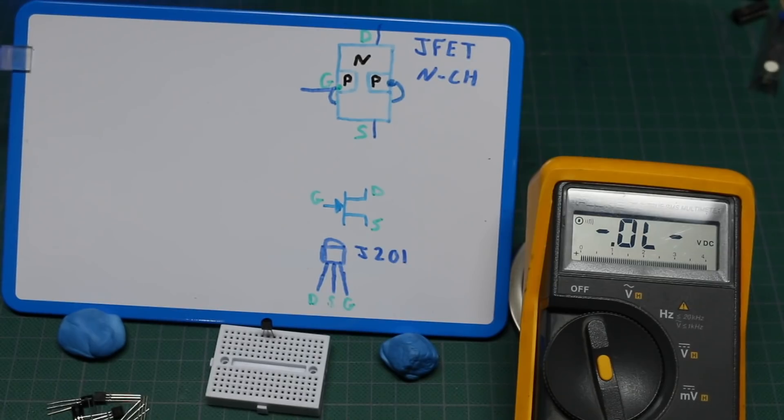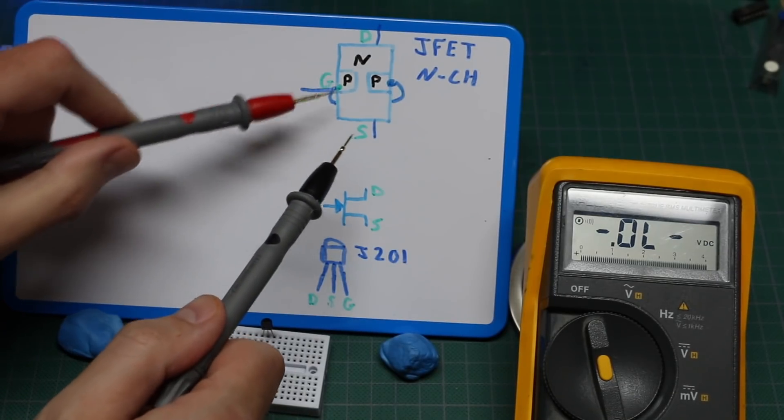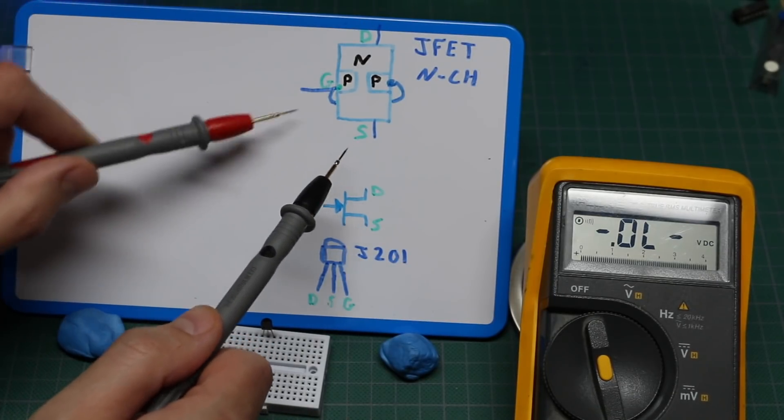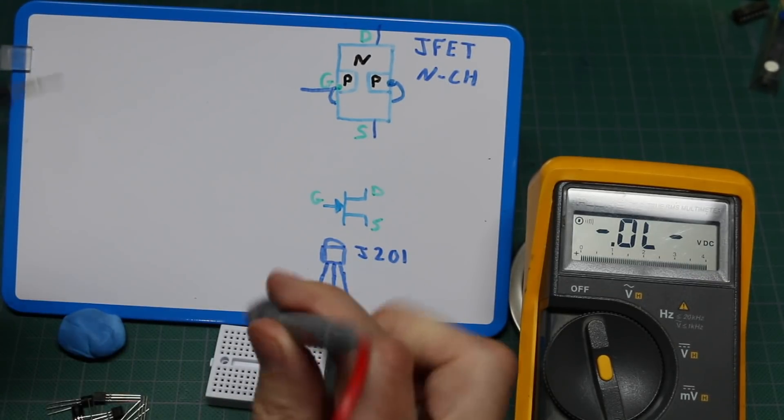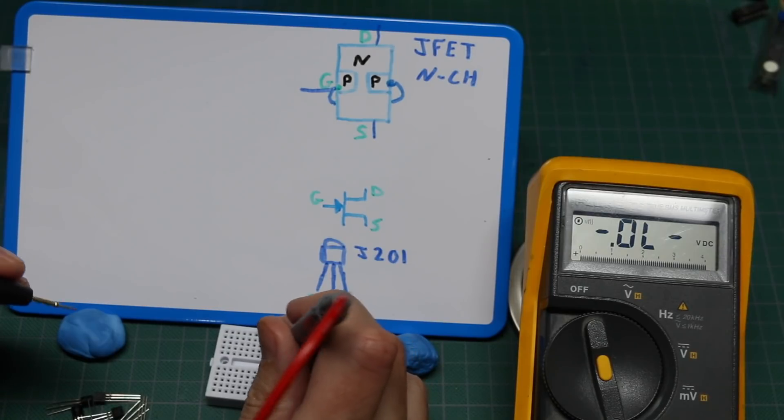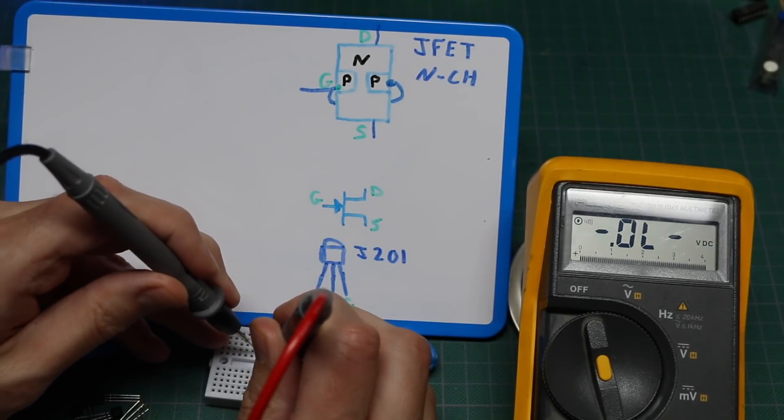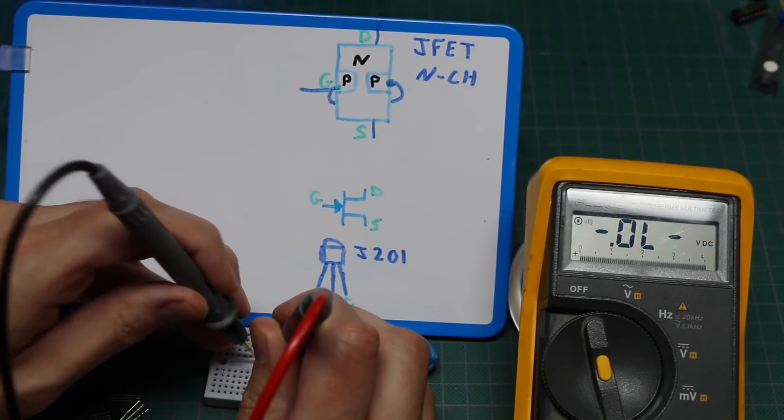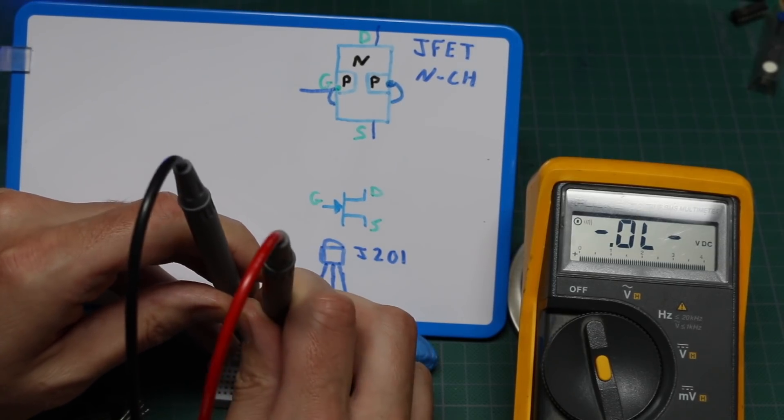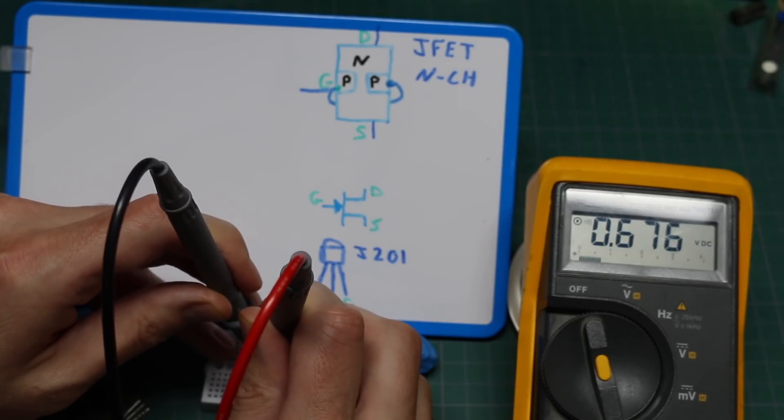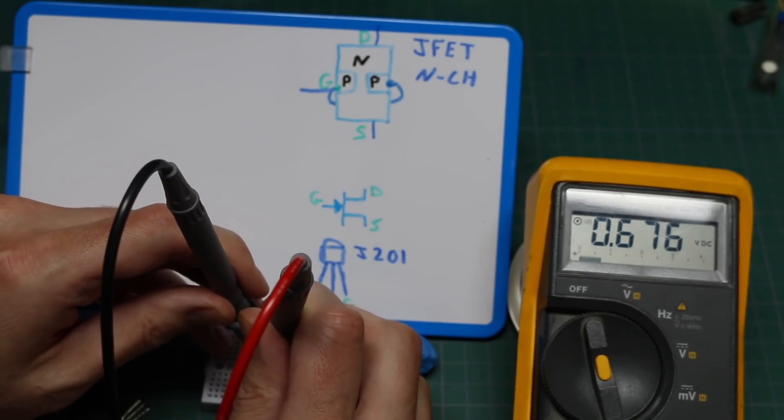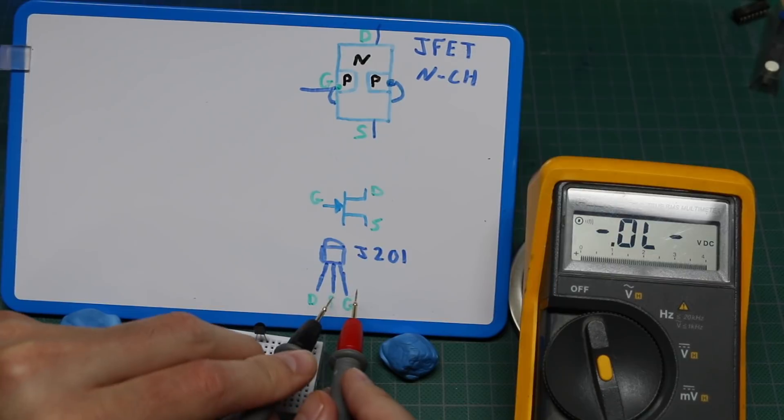I'll go into diode check mode and test these PN junctions from gate to drain and gate to source. Positive probe on the gate p-type material for forward bias. Diode check to drain: open circuit. To source: I get a diode drop, forward biased from gate to source,